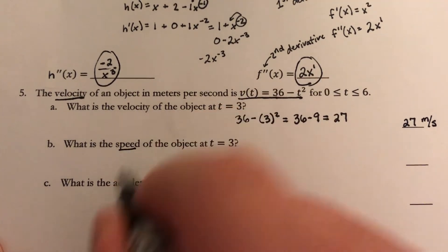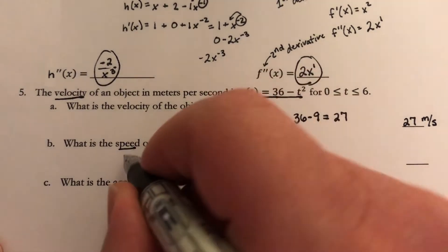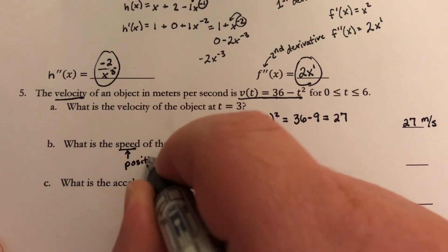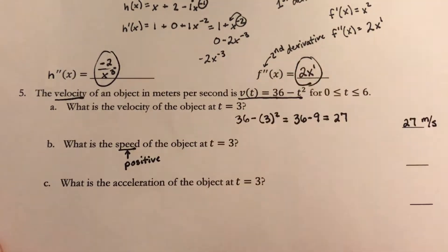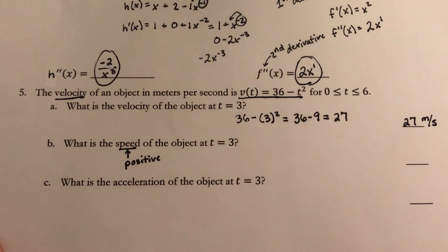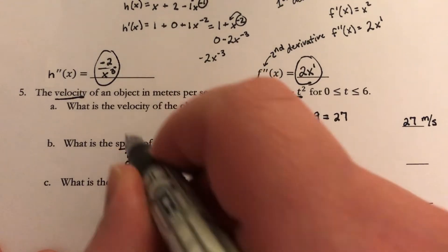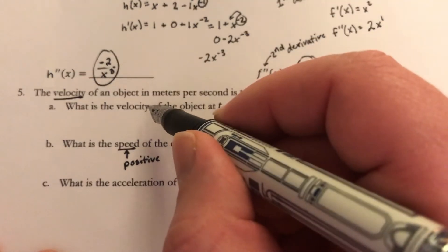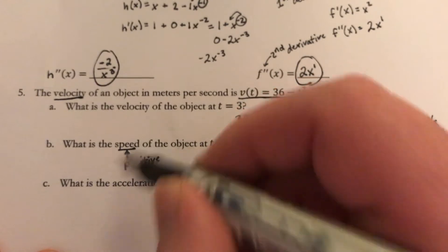Again, speed is related to the velocity. The only difference is that speed has to be positive at all times. Had I gotten a negative number for the velocity, I'd have to just make it positive. These two things are related. Velocity and speed are almost exactly the same thing. The only difference is velocity can be negative, speed must always be positive.